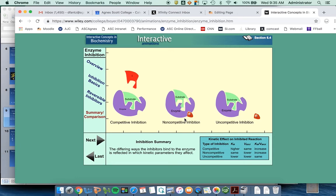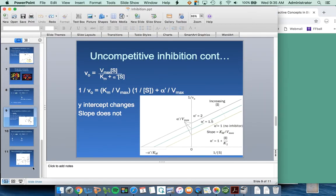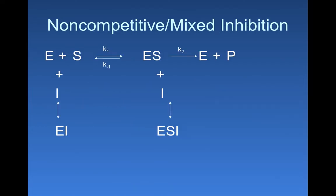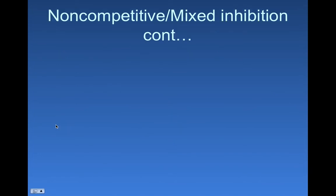And so the effect on Km and Vmax is pretty complicated. If we look at the way that this inhibitor interacts, we can see that it can bind to the free enzyme to form an enzyme inhibitor complex, or it can bind to the enzyme substrate complex and form enzyme substrate inhibitor complex, both of these being non-productive.